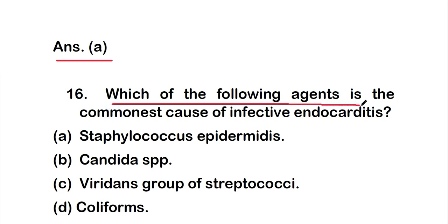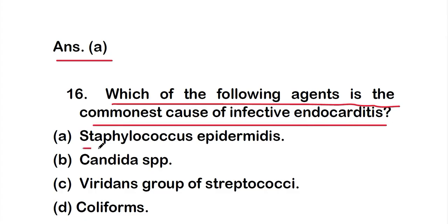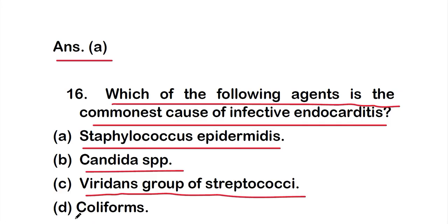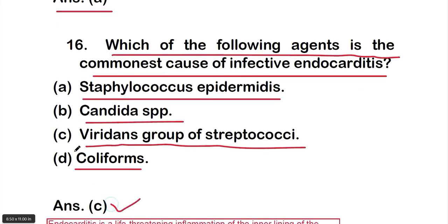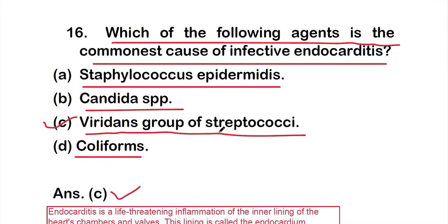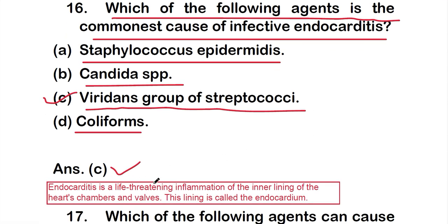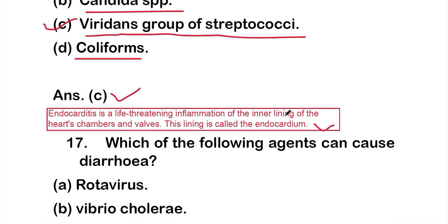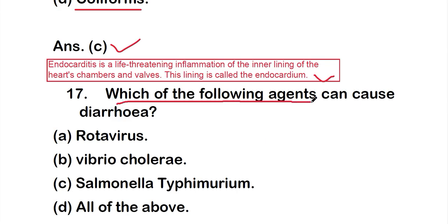Question 16: Which of the following agents is the commonest cause of infective endocarditis? Options: option A: Staphylococcus epidermidis; option B: Candida species; option C: viridans group of streptococci; option D: coliforms. The right answer is option C: viridans group of streptococci. Infective endocarditis is a life-threatening inflammation of the inner lining of the heart chambers and valves, called the endocardium.